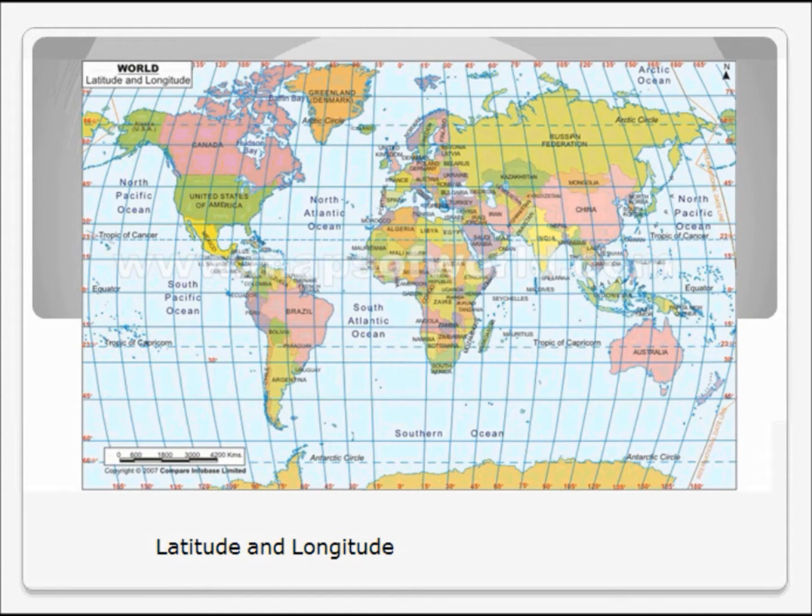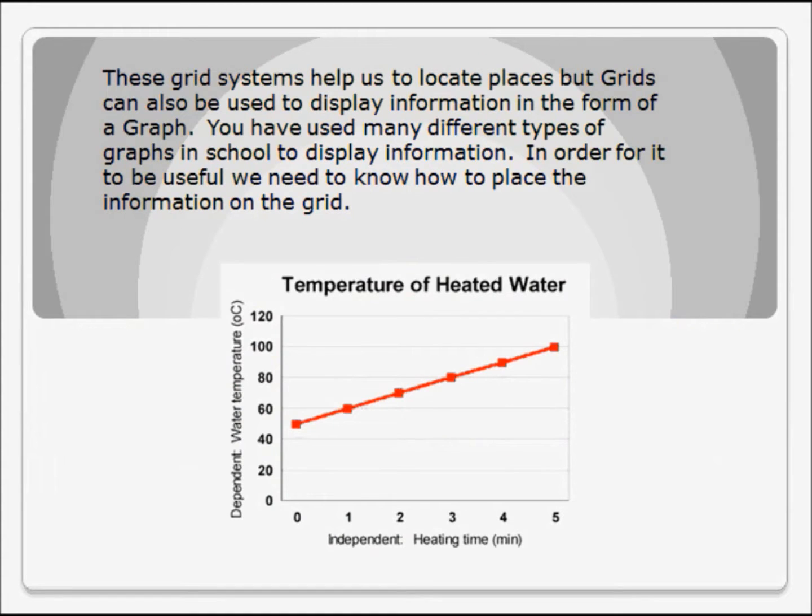On a large scale we use latitude and longitude grid lines. These lines will help us to locate any point on a world map. However, grids are not just used to locate positions on a map. They are also used to form and display information on a graph. In order for this graph to be useful we need to know where the information is to be placed. Below you will see a simple graph that we use in science.